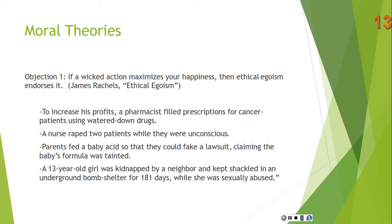Here's a final example: a 13-year-old girl was kidnapped by a neighbor and kept shackled in an underground bomb shelter for 181 days while she was sexually abused. If this made the kidnapper happy, ethical egoism says he should kidnap that girl. But if you think it's wrong to kidnap that girl, then you shouldn't be an ethical egoist. So these are all objections to ethical egoism — the main point being that if a wicked action maximizes your happiness, ethical egoism says you should do it.